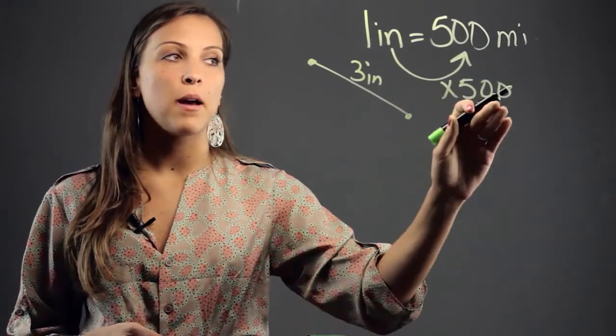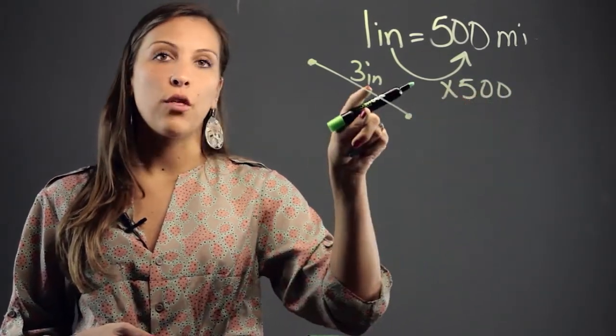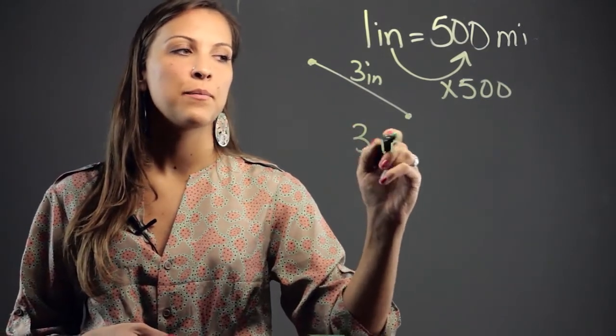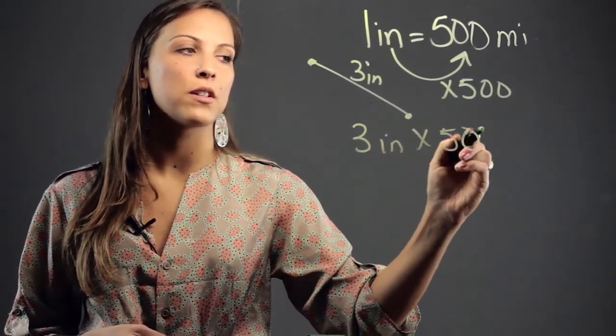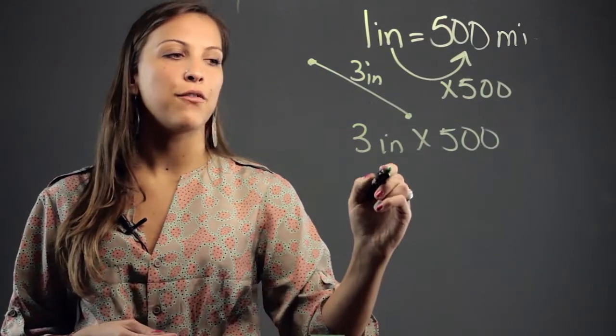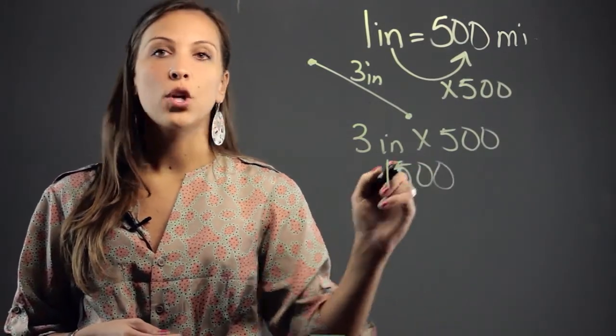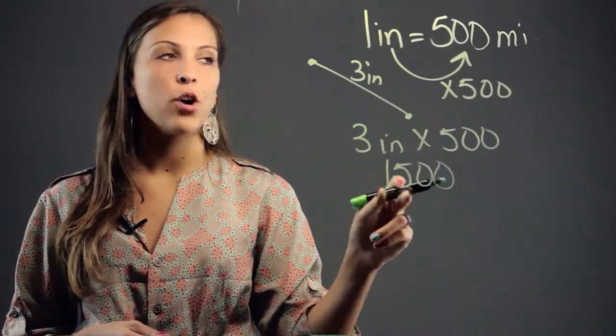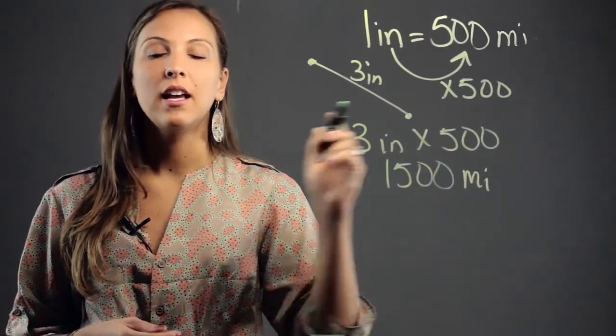So I have to multiply by that same factor for the 3 inches that I measured. So I'm going to take the 3 inches and multiply those by 500 as well. And when I do that, I get 1,500, showing me that the 3 inches on the map are equivalent to 1,500 miles in real life.